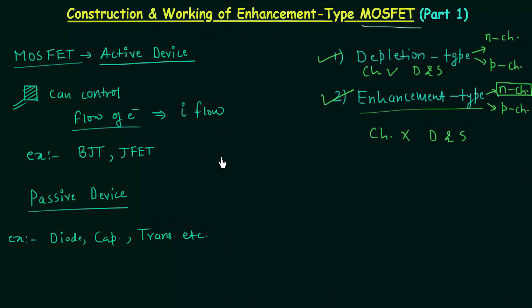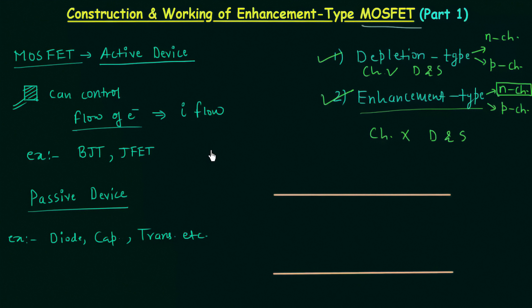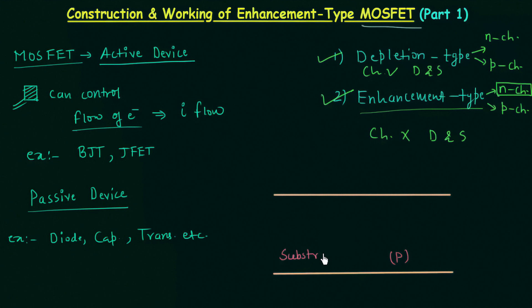First we take the parent material or body or base of silicon and then we dope it with trivalent impurities to make it P type material. This is the parent material or the silicon wafer. We call this substrate or body, and in case of N channel enhancement type MOSFET it is of P type.